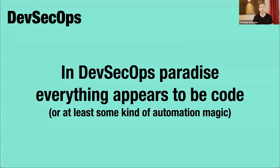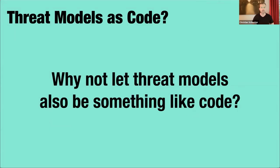How did we tackle the testing problem in terms of security tests in DevOps? By automating things as best as possible. Some people call it DevSecOps, but it could also just be called DevOps — security should be obvious in that. That has succeeded due to some kind of automation magic: all the tests we nowadays use in pipelines are more or less automated, scanning code, scanning dependencies, and things like that.